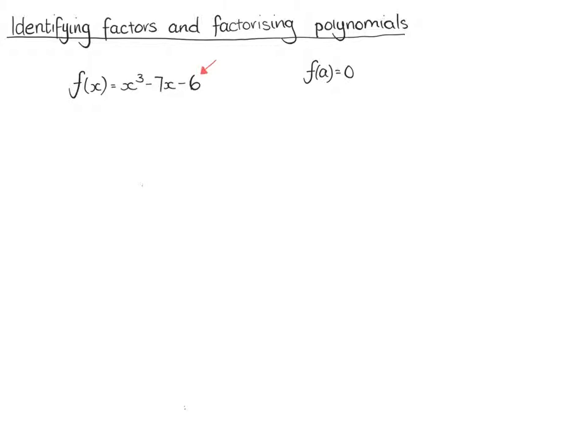First of all, it's easy to start with 1. So we're going to trial and error while looking at the factors of that last number. So if we try 1, it's going to be 1 cubed minus 7 times 1 minus 6, which is 1 minus 7 minus 6, which is minus 12. So it's not a factor, so we try the next one.